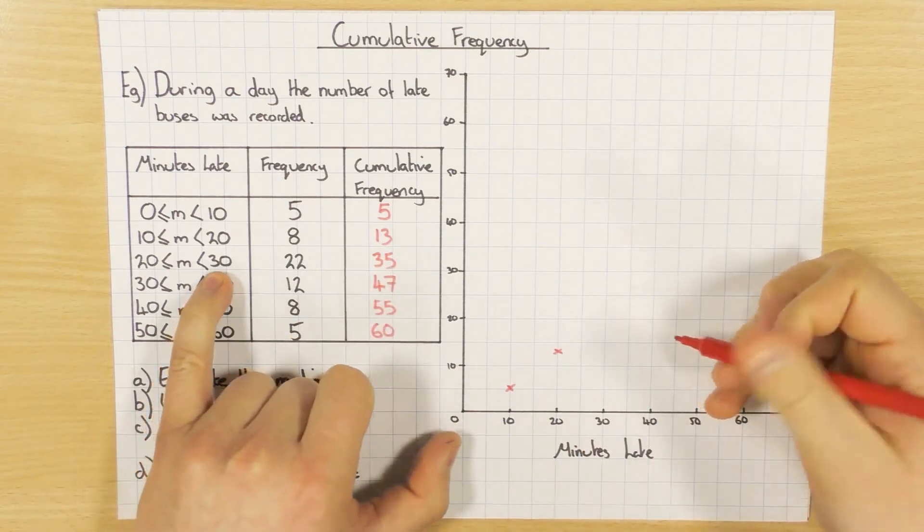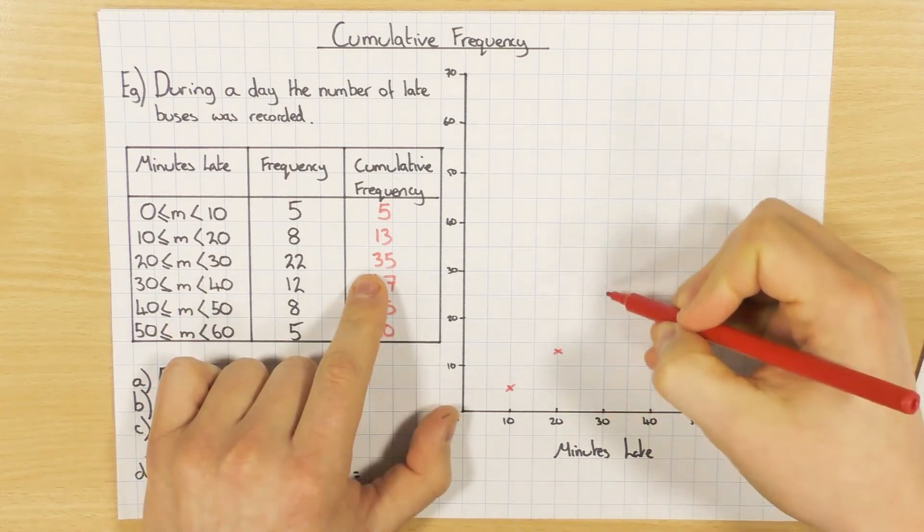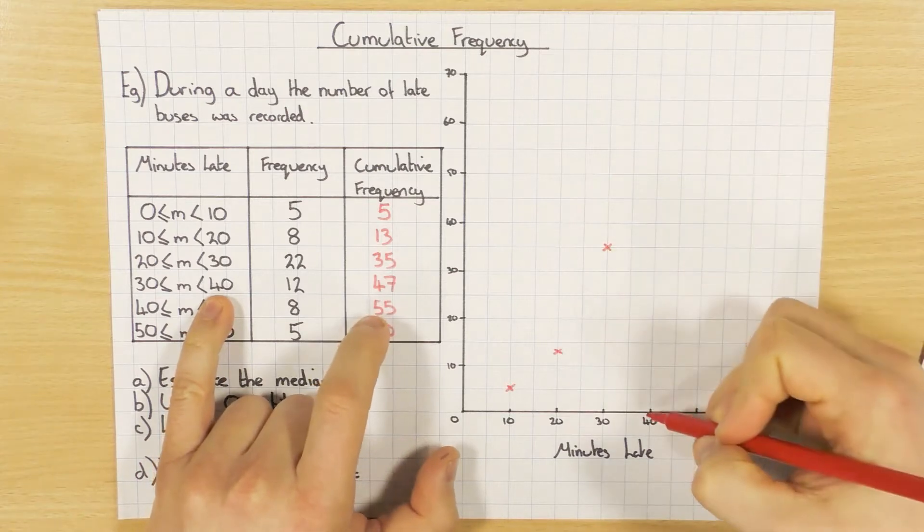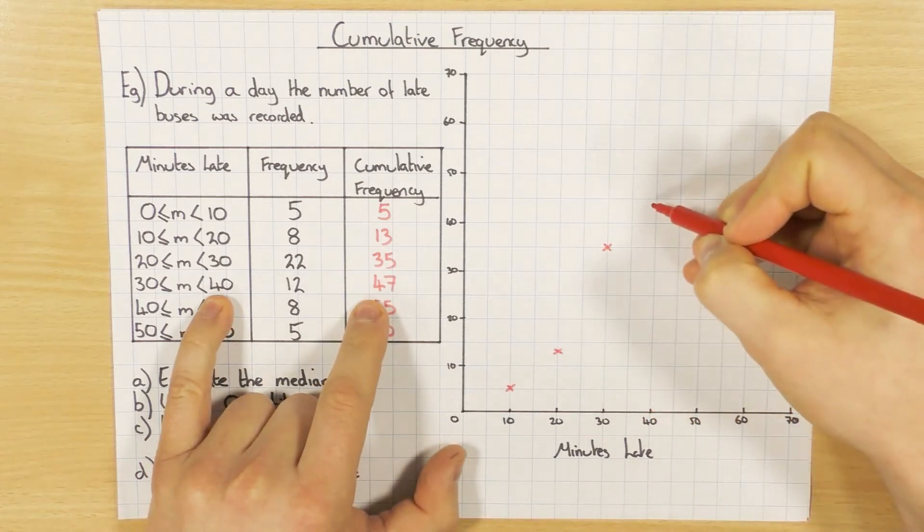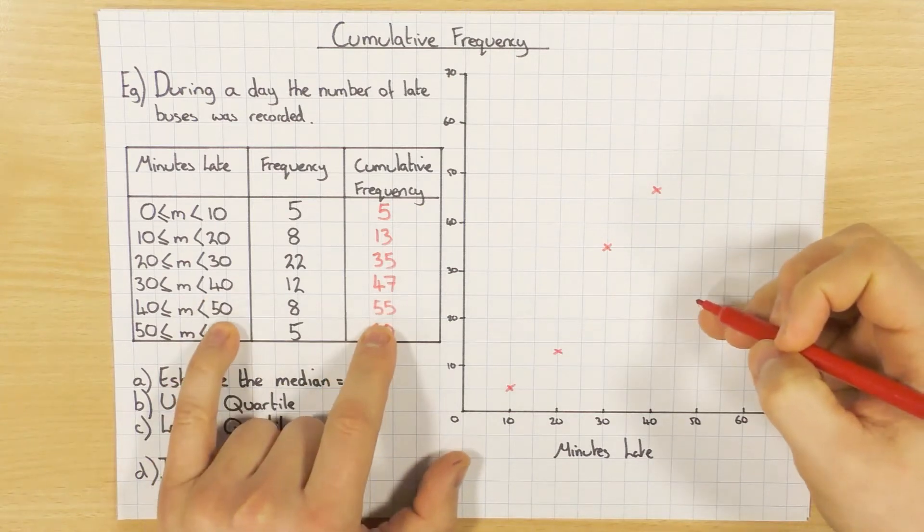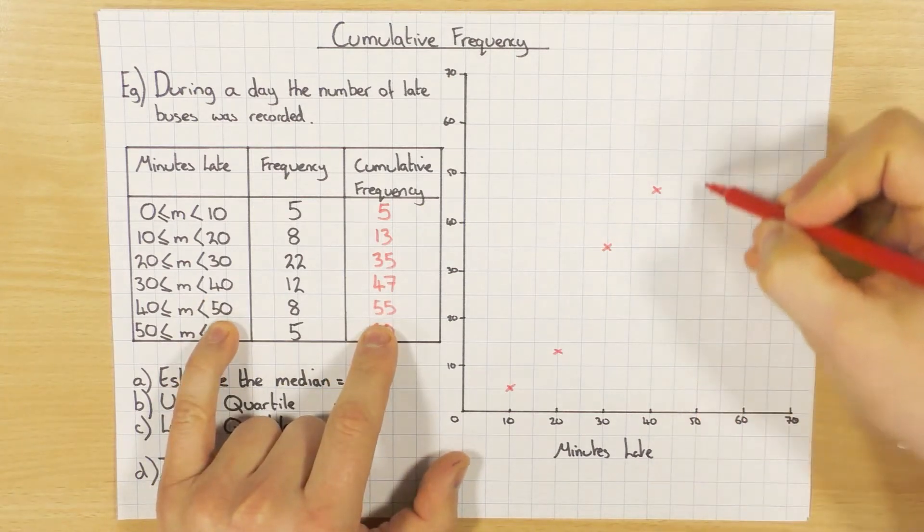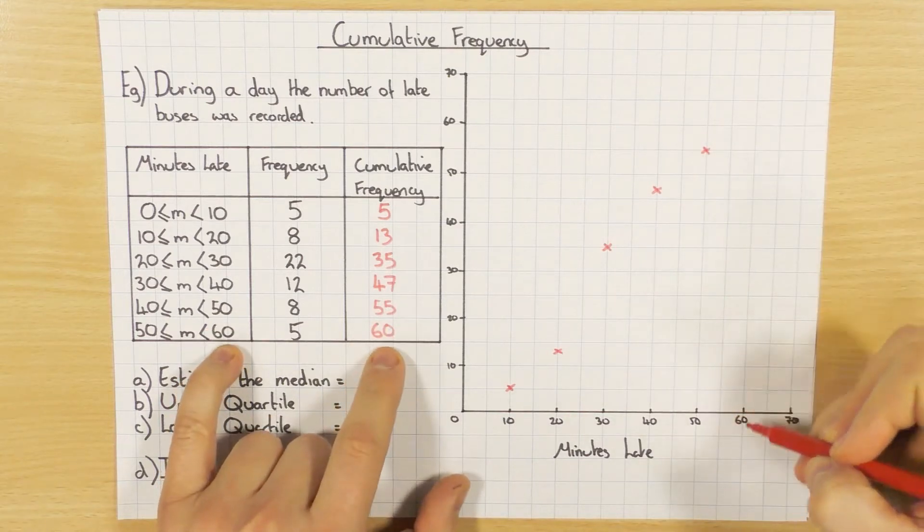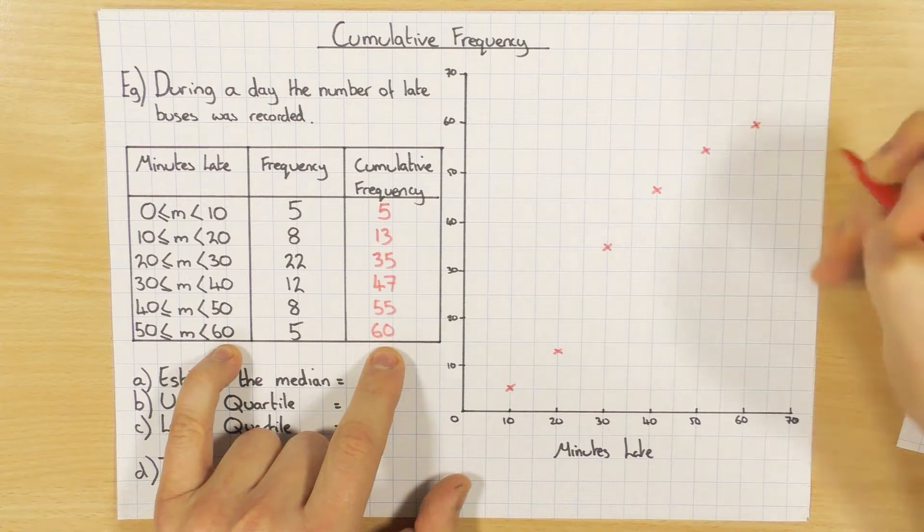So next one, upper limit is 30, and it's 35, so there. Next one, upper limit is 40 and 47, so about there. And upper limit is 50 and 55, and the last one, upper limit is 60, and of course 60 in total.